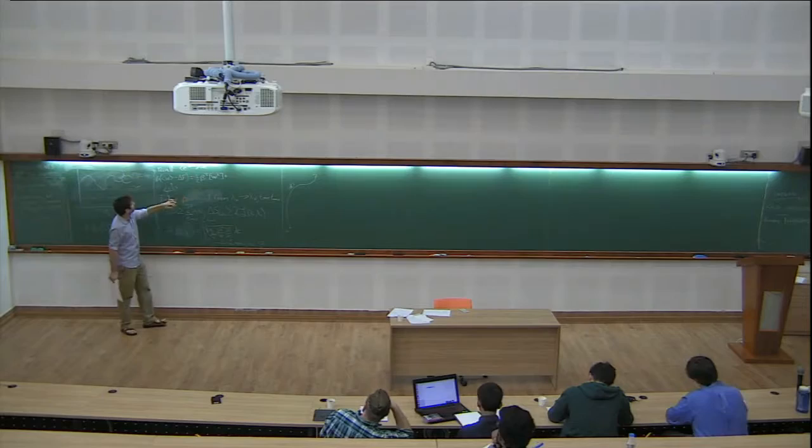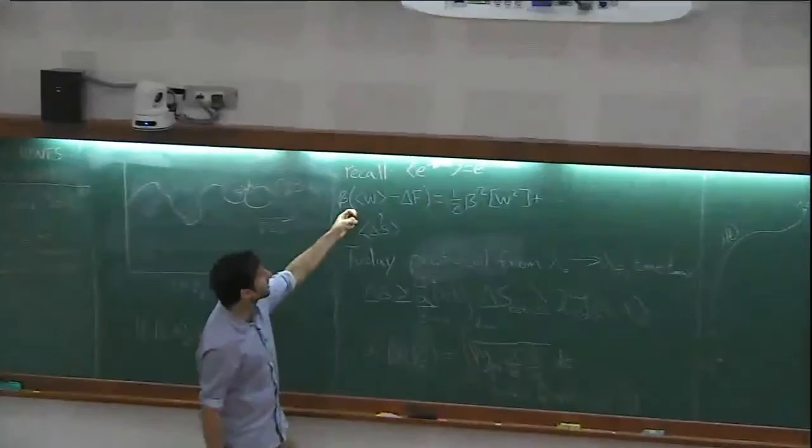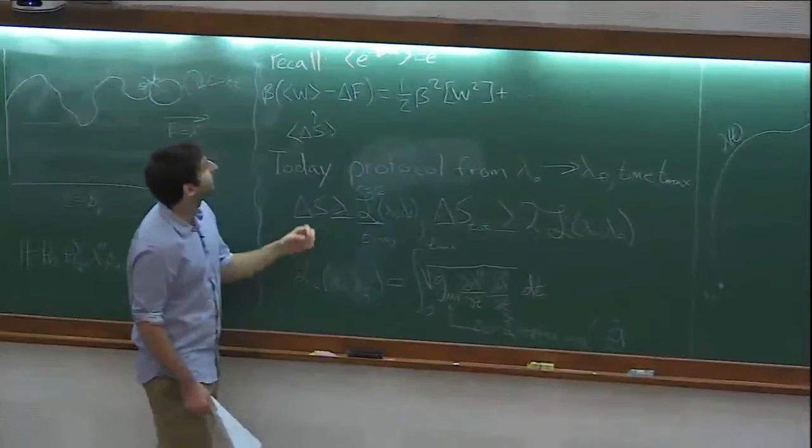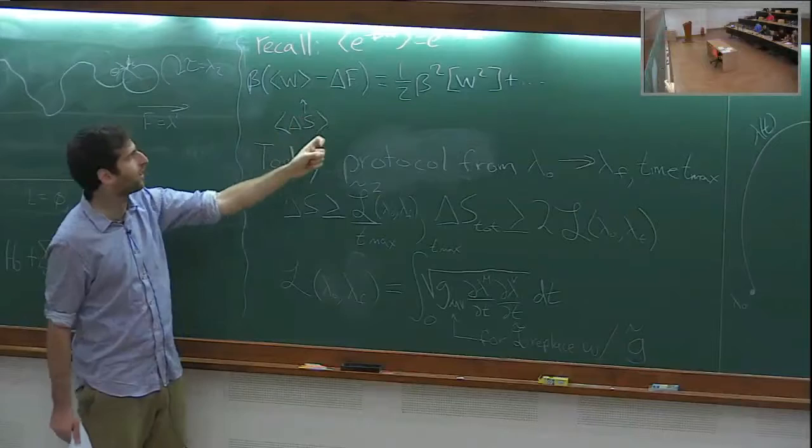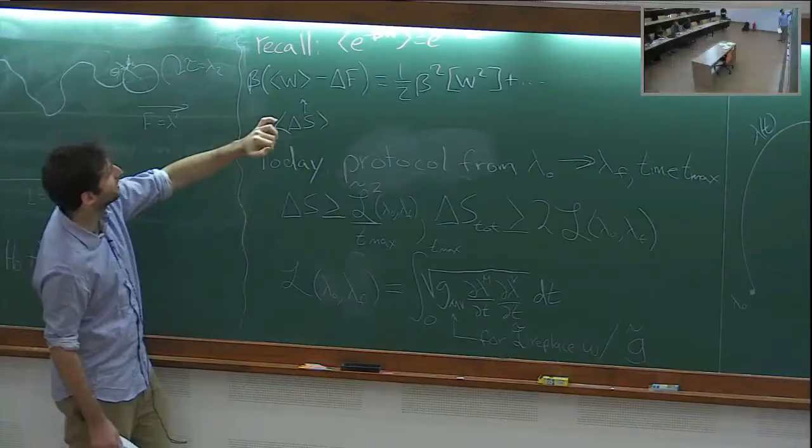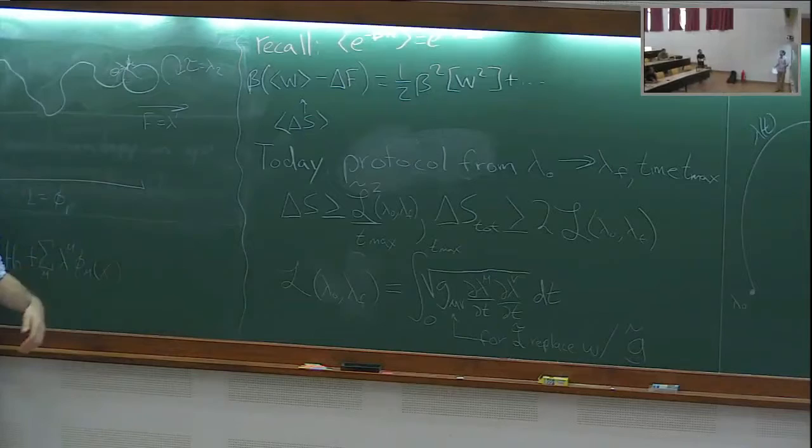Yesterday we derived the Jarzynski equality. For the rest of this lecture, we're just going to be using the first two terms and ignoring all the rest. As a reminder, this β times the work minus ΔF is really the increase in entropy — it's the sum of the change of entropy internal to the system and the entropy of the baths.